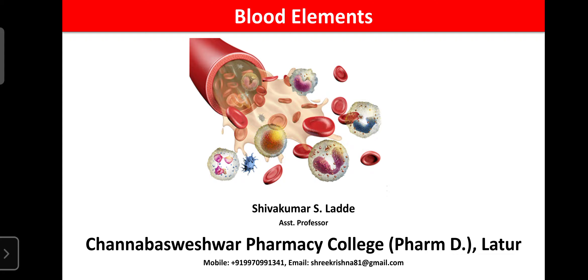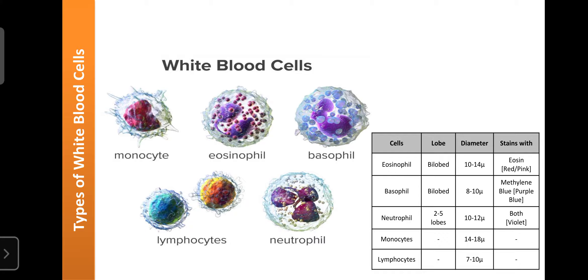WBCs are mainly classified into two types: granulocytes and agranulocytes, based on the presence of granules in their cytoplasm. Eosinophils, basophils, and neutrophils have granules in their cytoplasm, so they are known as granulocytes. Cells like monocytes and lymphocytes do not have any granules, so they are known as agranulocytes.